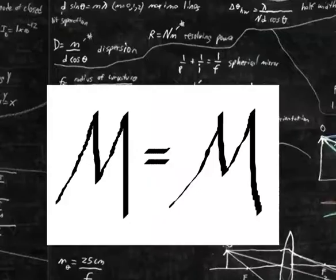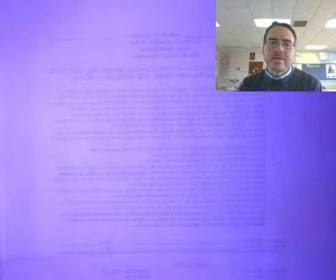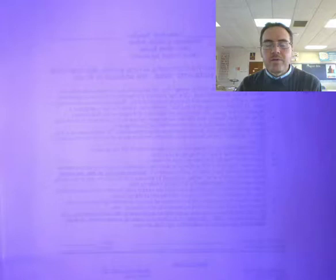Welcome to another edition of Math is Still Math. Today we're going to be looking at the Pythagorean theorem and how to solve for missing legs, missing heights, missing bases, missing hypotenuse, and everything in between.